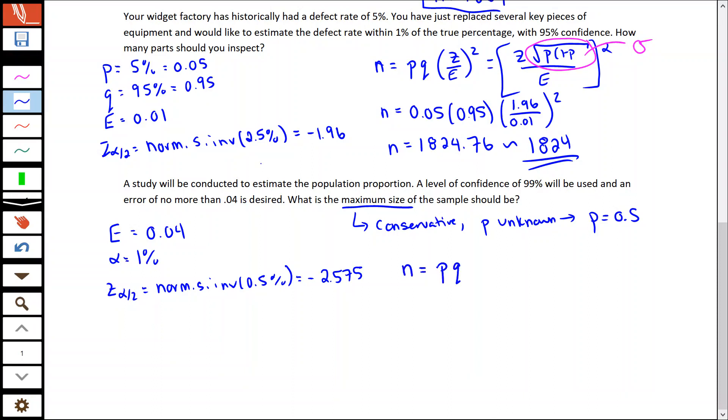N equals P, Q, Z over that error squared. If our P is 50%, this means our Q is also 50%. Our Z is 2.575. And our error there, 0.04. We're just going to square that. It's going to give us an answer of 1036.03. So again, this isn't about rounding, it's about always rounding up.